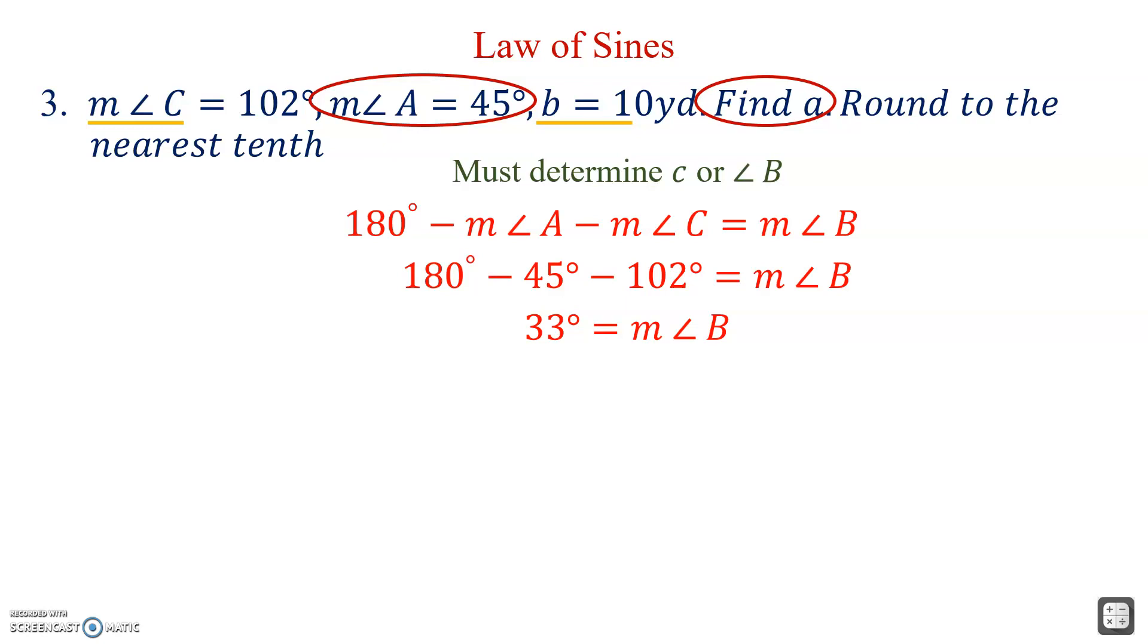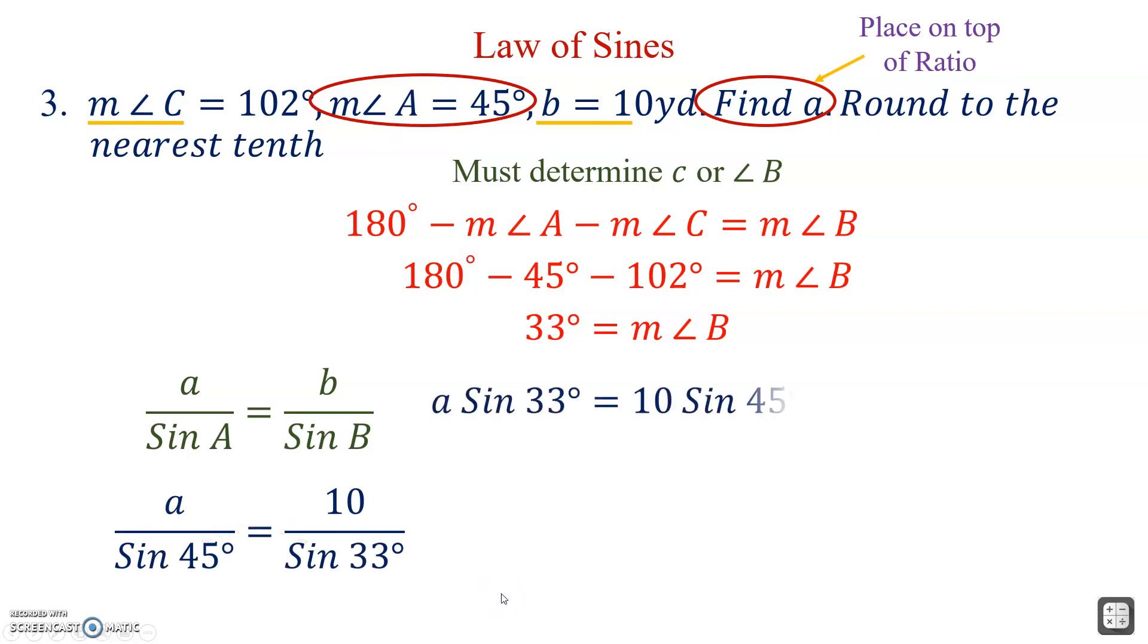We now have the two complete ratios. We have the ratios of the A's and the ratios of the B's. We're trying to find lowercase a, so that has to go on top. Lowercase a over sine A equals lowercase b over sine B. This right here, the measure of angle C, we're not using. We did use it just to help us find the measure of angle B. We substitute the values in.